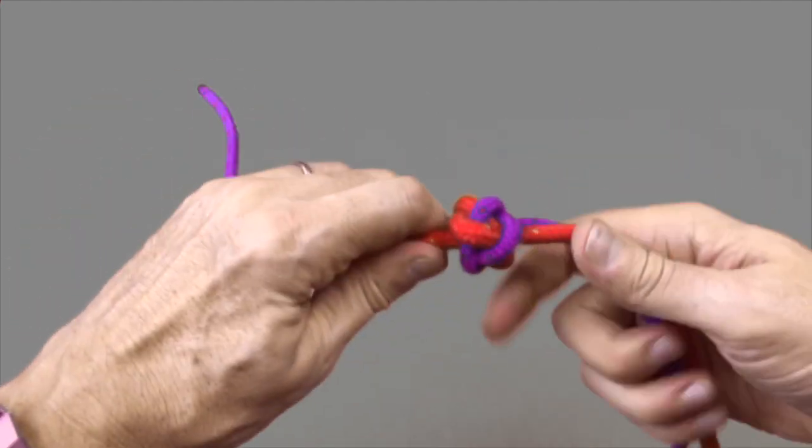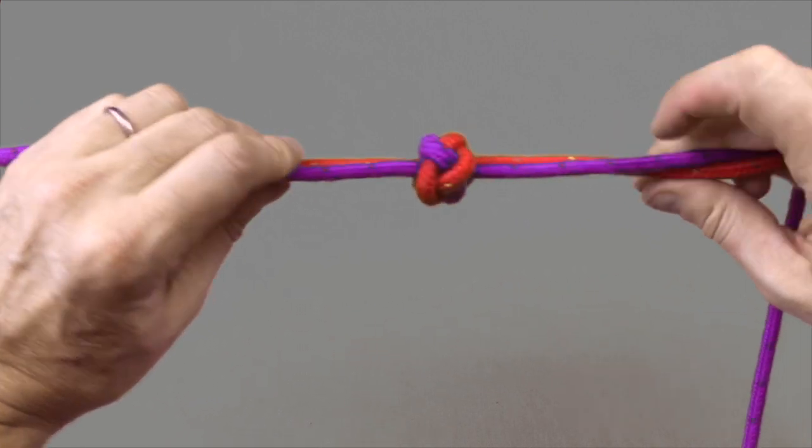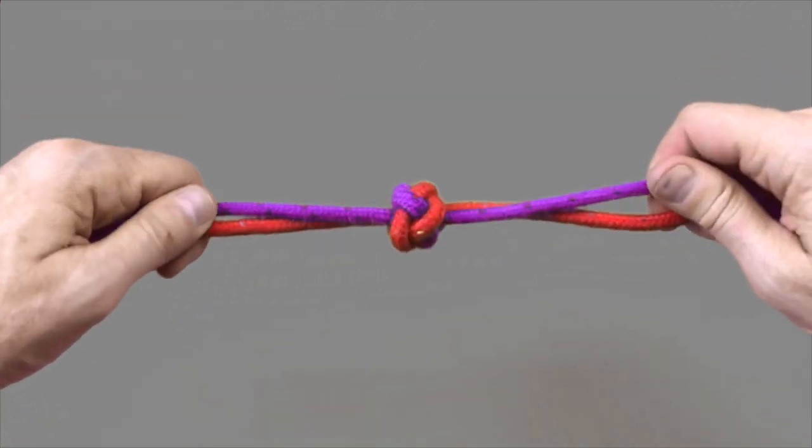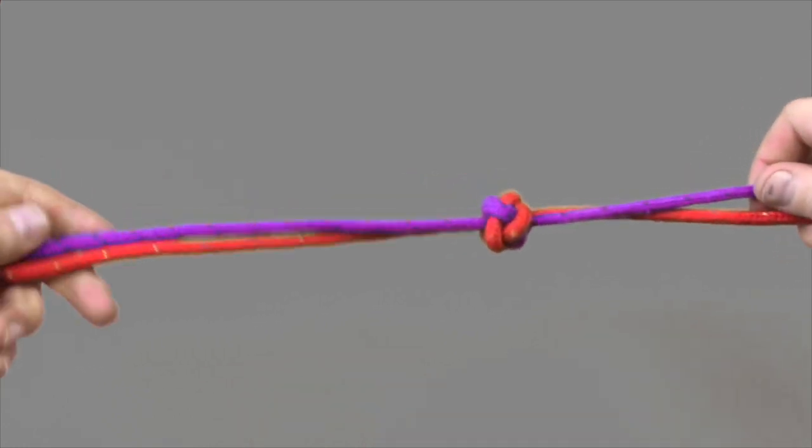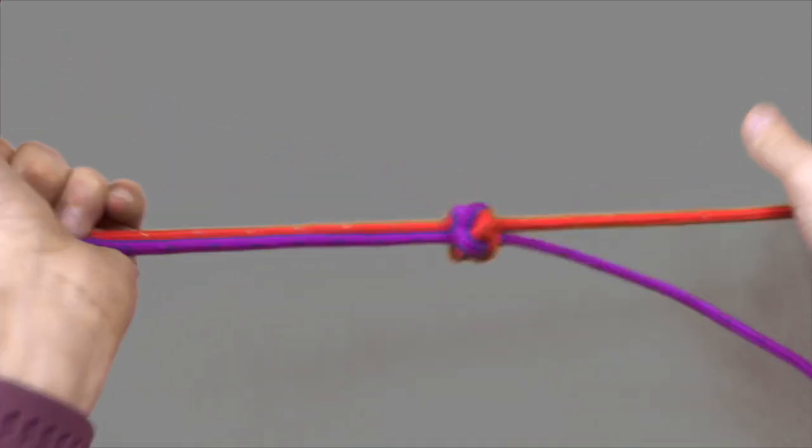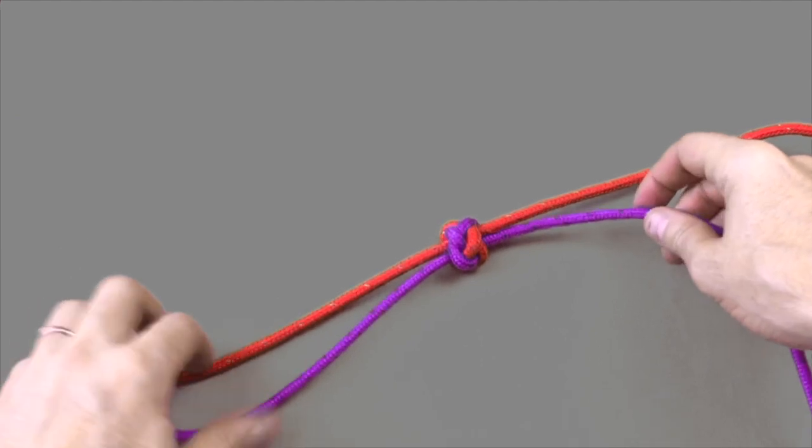The diamond knot has many uses. Some of the most popular ones are at the end of control lines to act as a handle. And maybe the most common one in modern rope work is in the application of soft shackles.